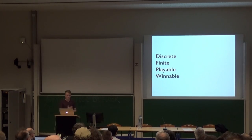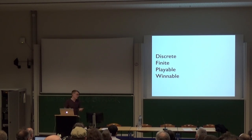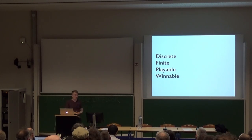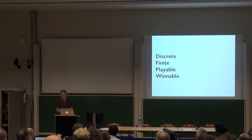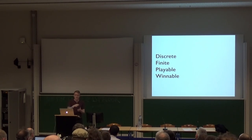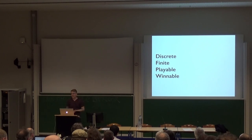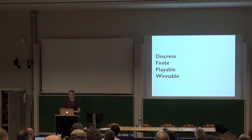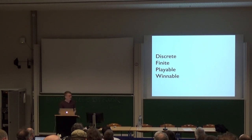First, our field is really only interested in discrete games — stuff where the game has discrete states, like chess or poker. We're not interested in something like tennis that's continuous. We want all of our games to be finite, just because we don't want to deal with infinite loops. So we want all games to terminate eventually after some finite number of steps. We also want all of our games to be playable, which means that at any given point, either the game's over or each player has a move. We never want to back a player into a corner where they can't make a move but the game somehow has to go on.